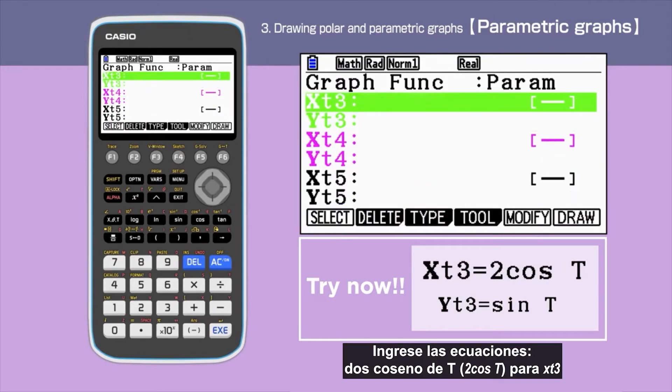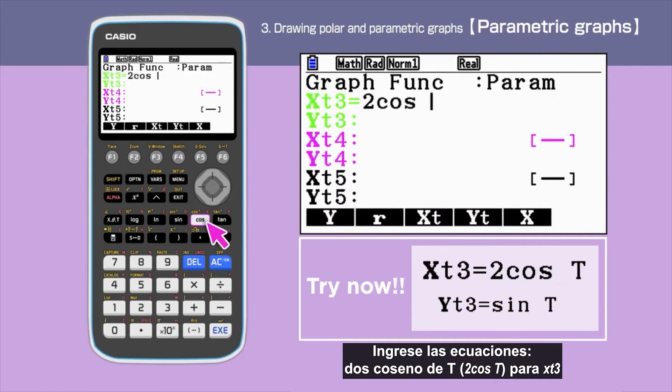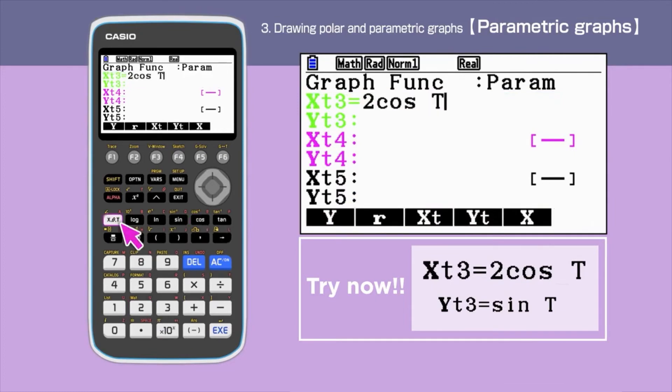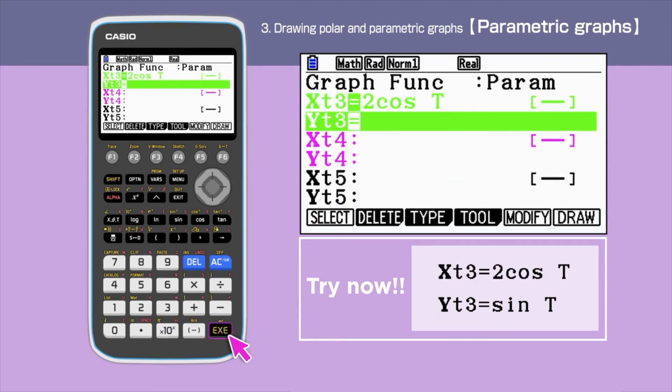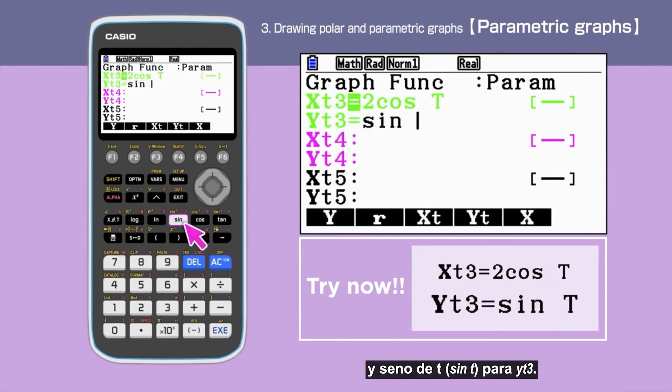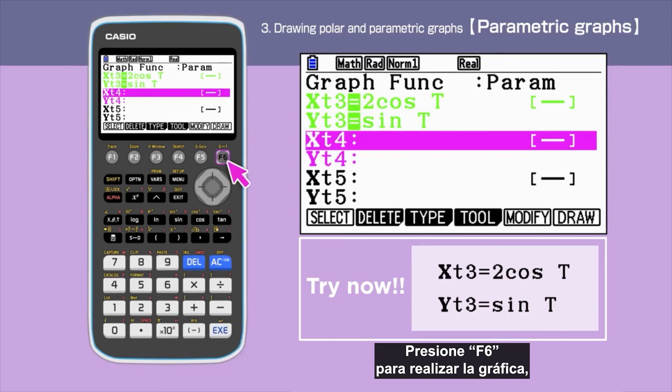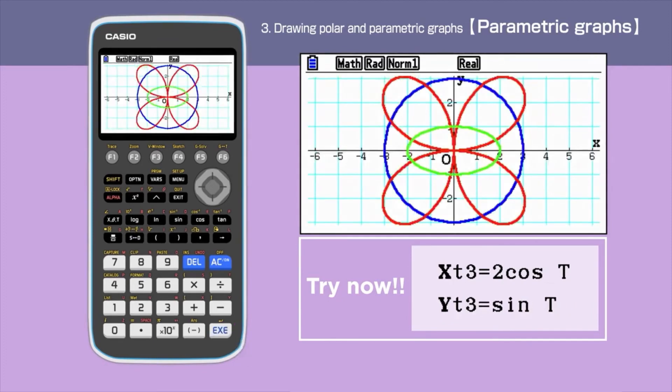Insert 2cosT for XT3 and sinT for YT3. Press F6 to draw the graph. We have drawn an ellipse shown in green.